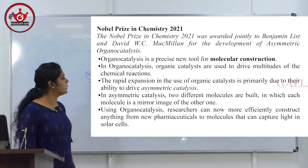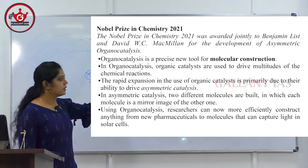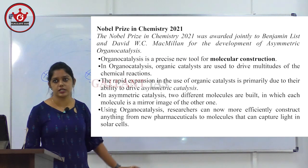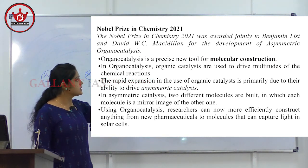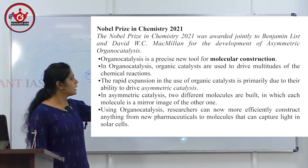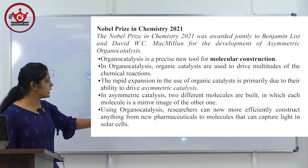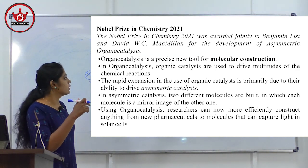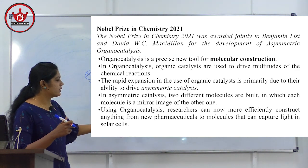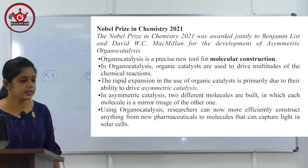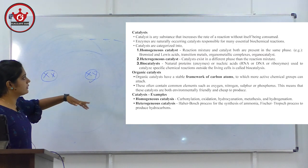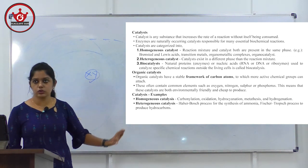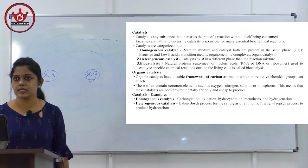Nobel Prize in Chemistry 2021 was awarded for organocatalysis — a precise new tool for molecular construction. Organic catalysts are used to drive multitudes of chemical reactions. The rapid expansion is primarily due to their ability to drive asymmetric catalysis. Catalysts are classified as homogeneous catalysts, heterogeneous catalysts, biocatalysts, and organic catalysts. Chemistry Nobel Prize was for organocatalysis; Physics Nobel Prize was for complex systems.